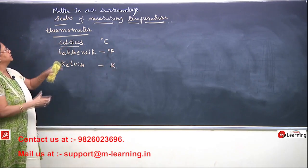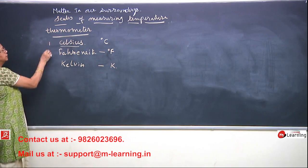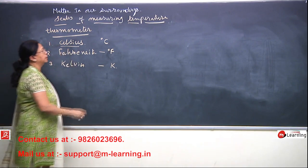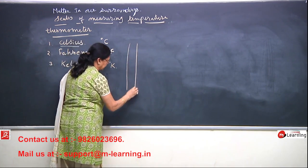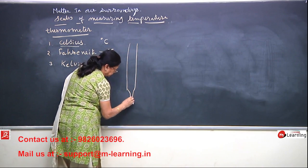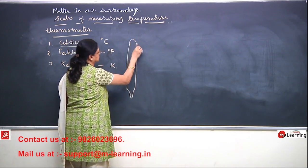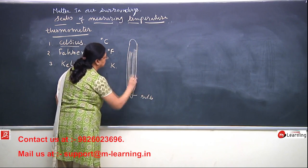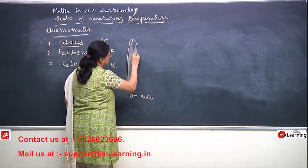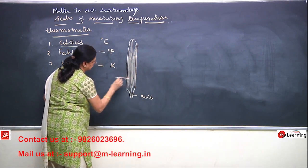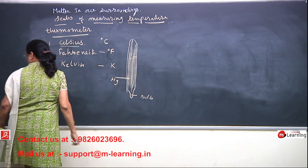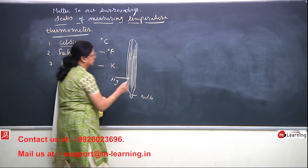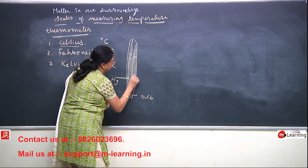So there are 3 scales for measurement of temperature: Celsius, Fahrenheit, and Kelvin. Now suppose this is a thermometer — this is the bulb of the thermometer, and this thermometer is filled with mercury. On this thermometer you can see markings or graduations.